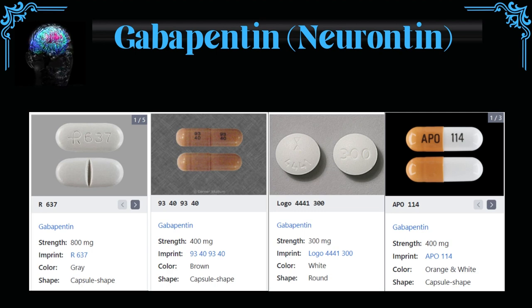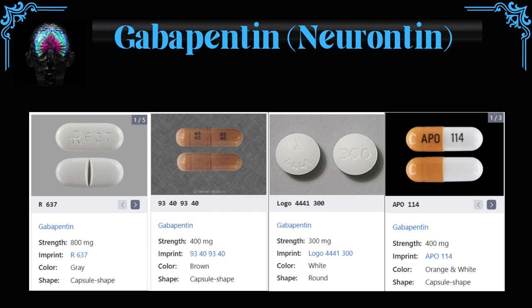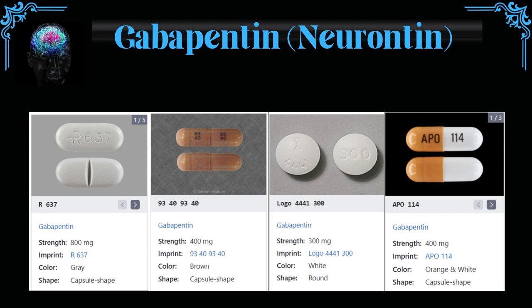The maximum dose of gabapentin for mood disorders and neuropathic pain can range from 3,600 mg to 4,800 mg a day, but the exact dose may vary based on the individual patient's medical condition and response to treatment.